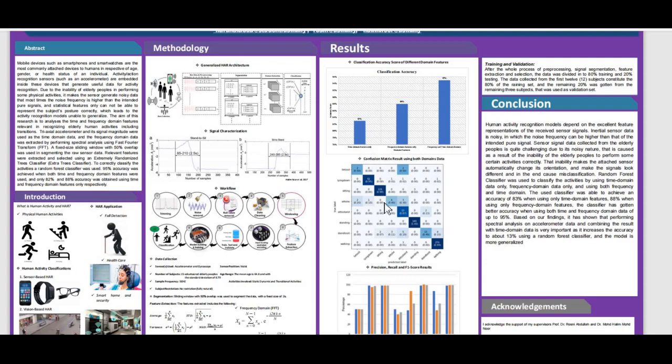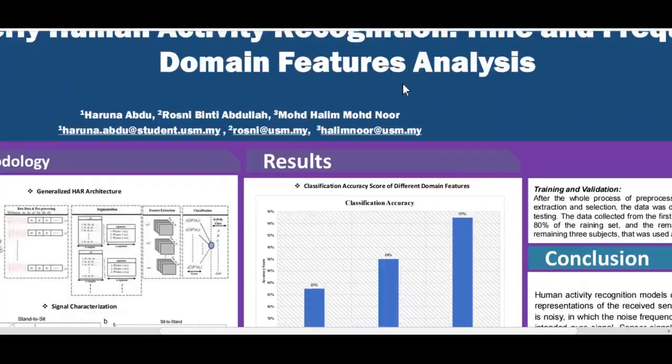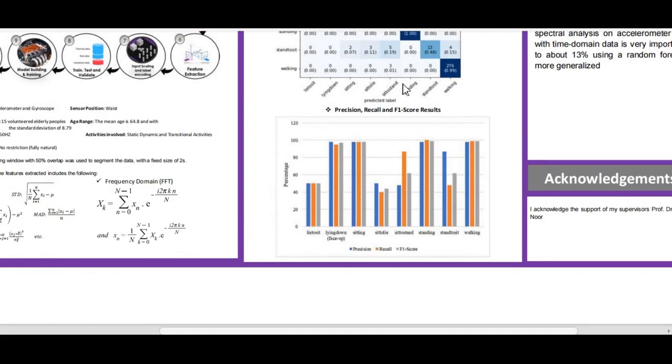For results, we got three different kinds of results by testing time domain only and frequency domain only, then we matched the two. When we tested with time domain features only, we got 83%, while with frequency domain features only we got 88% accuracy. When we tested with combination of the two, we got 95% accuracy.